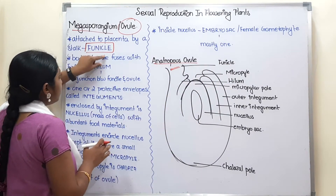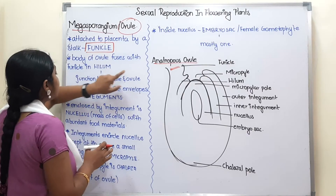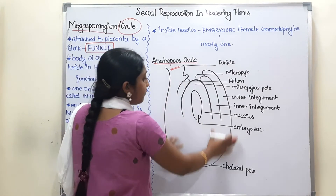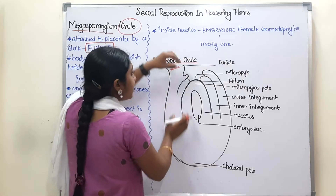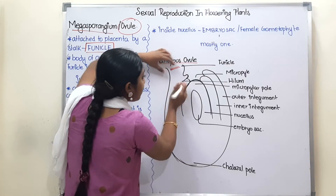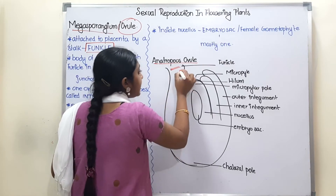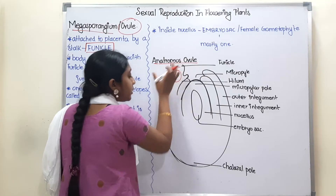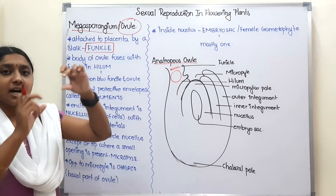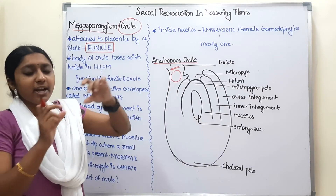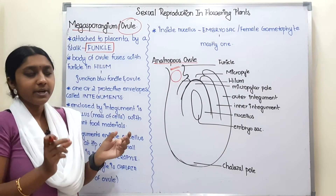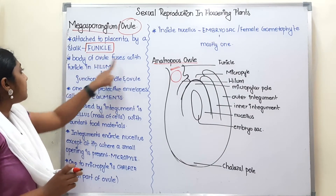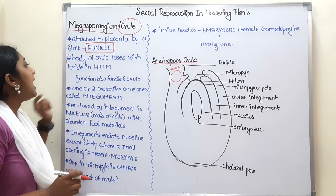The body of the ovule fuses with the funicle. This is the funicle — it is a stalk-like structure, meaning a small attachment. The body of the ovule fuses with the funicle at the hilum region.